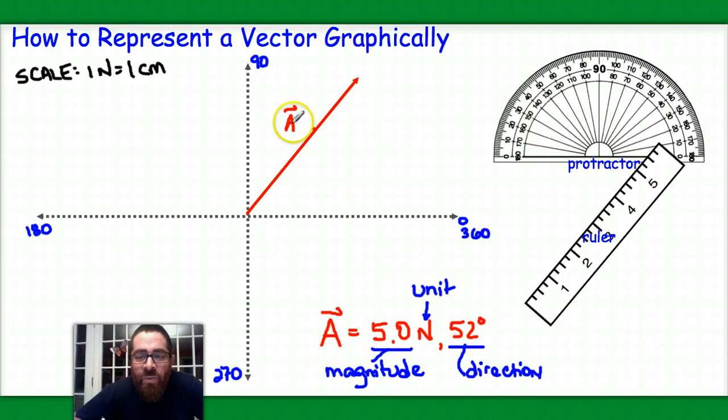Now, why don't, while we're at it, and I guess more quickly, let's go ahead and add a second vector. I'm going to call it vector B, and I'm going to say that vector B is also a force vector. We'll say that it's 3.2 newtons at 210 degrees. Why don't you think about which quadrant that would be in?